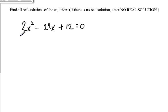The first thing I would do here is recognize that each coefficient is divisible by the number 2. We have 2, the negative 24, and 12.